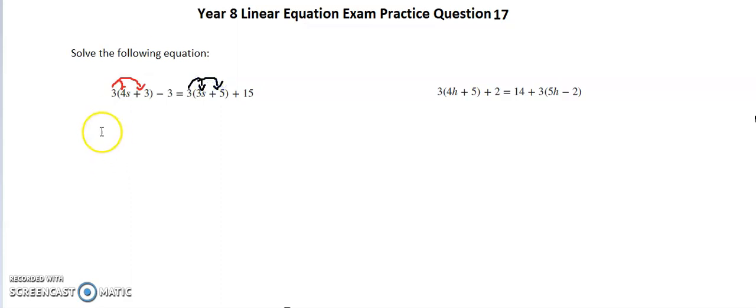If we do that, that gives us the equation: 3 times 4s is 12s, 3 times 3 is positive 9, so 9 minus 3 is equal to 3 times 3s which is 9s, 3 times 5 is 15 plus 15.